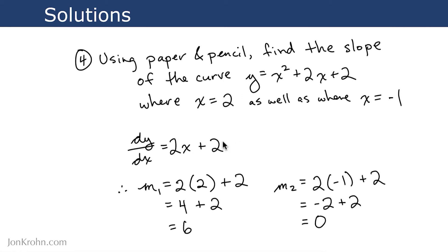And then we can calculate the slope at any point in this curve by dropping in values for x. So for exercise four, we dropped in x equals 2 to identify a slope of 6 at that point.